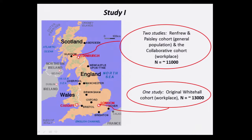So we looked at this in three studies in the first project. Both London and Glasgow have a long tradition of epidemiological research. These studies were conducted in Glasgow and London, involving studies of the general population — the Renfrew and Paisley study — and also a collaborative workplace cohort. Also conducted in London: the Whitehall civil servants. So we've got three cohorts, two based in Scotland and one based in England, and we compare the mortality patterns of these groups over time, using background data to help us understand what might explain the mortality differences.